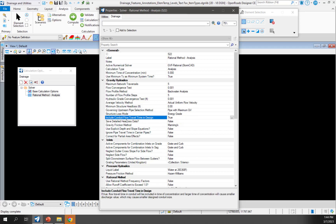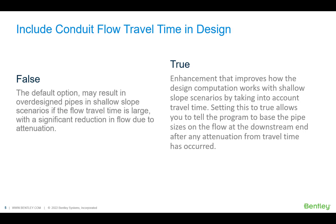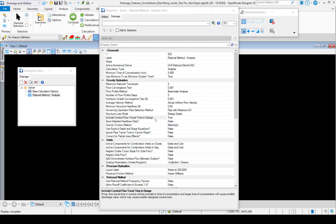Next, I'll move into including conduit flow travel time in the design. In legacy versions, the default value for this was false, which may have resulted in over-designed pipes in shallow slope scenarios if the flow travel time is large with a significant reduction in flow due to attenuation. This has since been enhanced, and now we can toggle this to true, which will improve how the design computation works with shallow slope scenarios by taking into account travel time. Setting this to true allows you to tell the program to base the pipe sizes on the flow at the downstream end after the attenuation from travel time has occurred. So I'll be setting that to true.